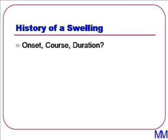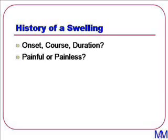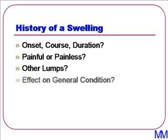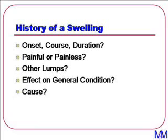We need to know how long the patient has had the lump and whether it's painful or painless. If it's painful, then obviously we take a full history of pain, and this often indicates an inflammatory process. Do they or have they had any other lumps, and have they been the same as this or different? If they've been the same, were they lymph nodes? Has there been any effect on the patient's general condition, or have they noted any other associated symptoms? Can they even make a stab at the cause, especially trauma, for instance?